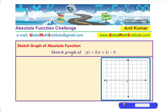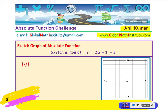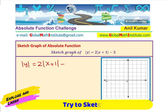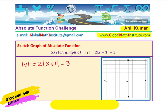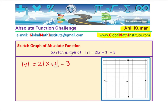Let's look at this question and try to understand it. We have absolute value of y equals 2 times absolute value of x plus 1, minus 3. We have been doing laws of graphing for absolute functions — that doesn't seem very difficult. We need to think about the absolute value of y on the left-hand side. The right-hand side has a vertex at minus 1, minus 3.